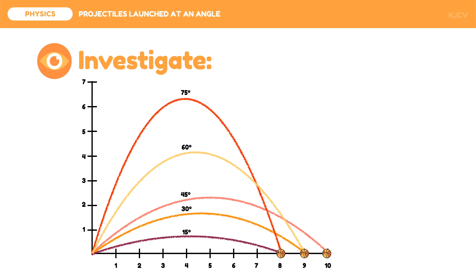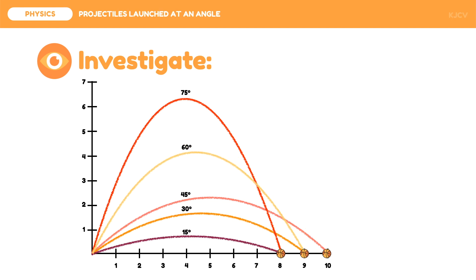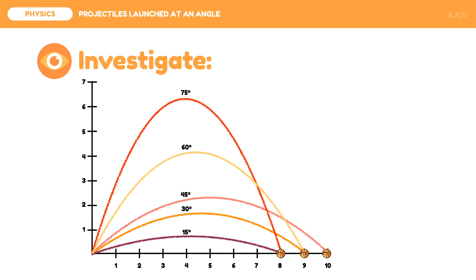Another important observation here is that the projectiles released at 75 degrees and 15 degrees had the same range of 8 units. This is also true for 60 degrees and 30 degrees, which had a range of 9 units. By analyzing the pairs of angles of release, these angles add up to 90 degrees. We can now say that complementary angles have the same range. Lastly, we can see that the projectile which had the longest range is the one launched at 45 degrees, and the projectiles which had the shortest range are the ones launched at 75 degrees and 15 degrees.